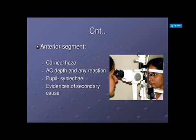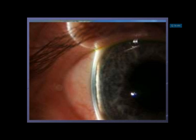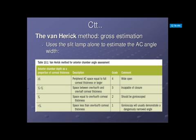This figure shows slit lamp examination of a patient, in which we can assess corneal haze, anterior chamber depth, pupillary reaction, synechiae formation, and evidence of a secondary cause. We analyze the anterior chamber depth at the periphery: if the anterior chamber space equals the full corneal thickness, it is wide open; if between one-quarter and one-half corneal thickness, it is incapable of closure; if equal to one-quarter corneal thickness, gonioscopy should be performed; and if less than one-quarter corneal thickness, gonioscopy will definitely show a narrowed angle.